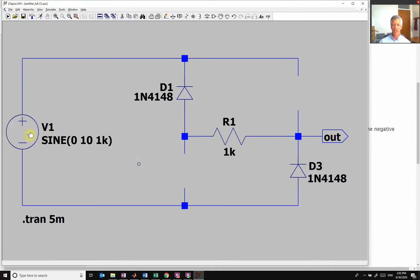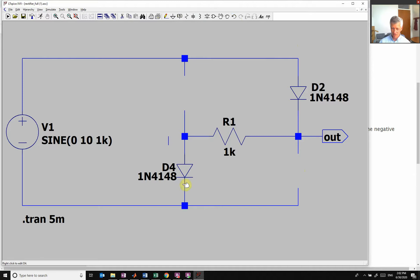So we're going to start like this. So when my voltage is positive, you see my current is going to flow through this diode, across the resistor, and then down.